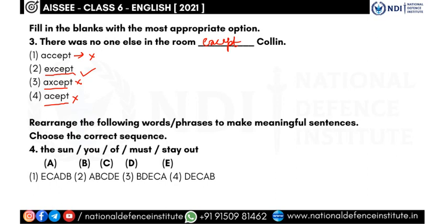The fourth question: rearrange the following words or phrases to make meaningful sentences. We are given jumbled words — 'the, sun, you, of, must, stay, out' — and we need to form a proper sentence. Let's look at option one: E-C-A-D-B, which gives 'stay out of the sun must' — there's an error, so we cancel the first option.